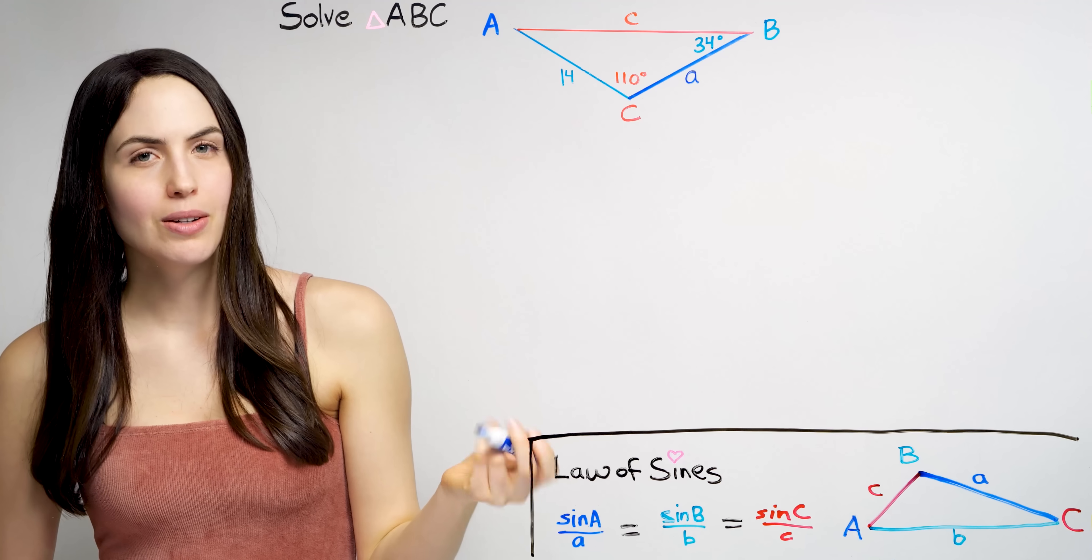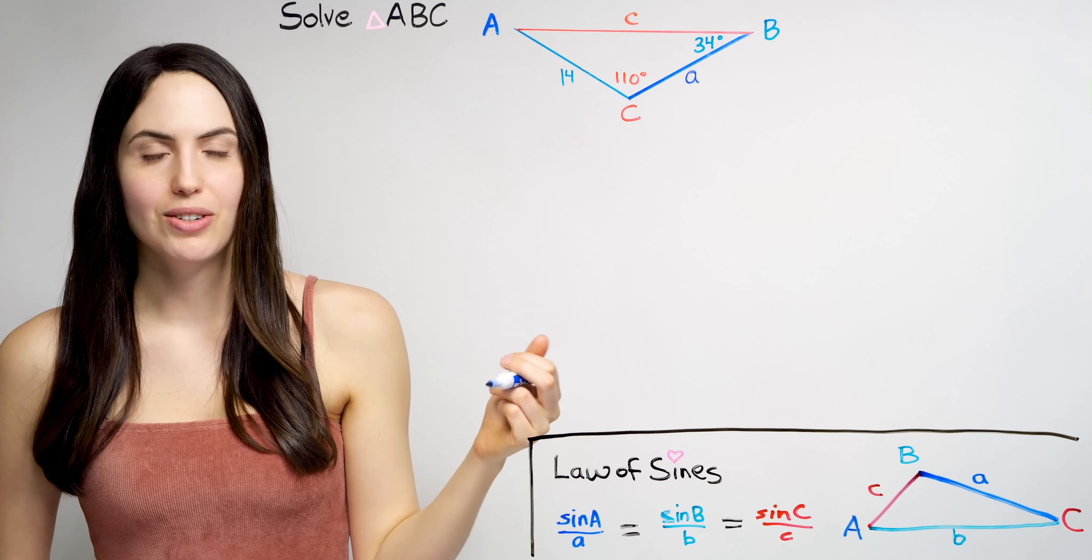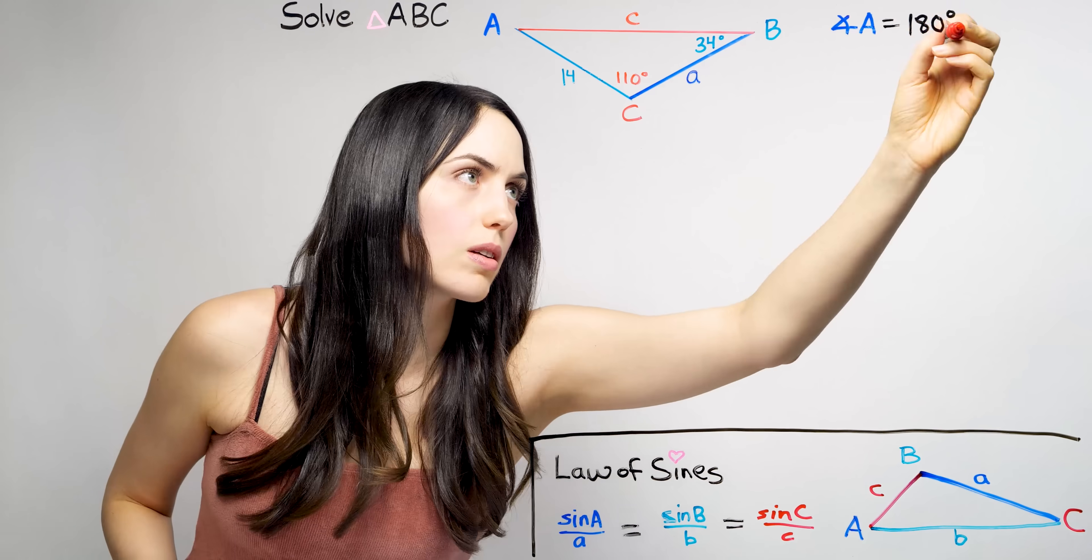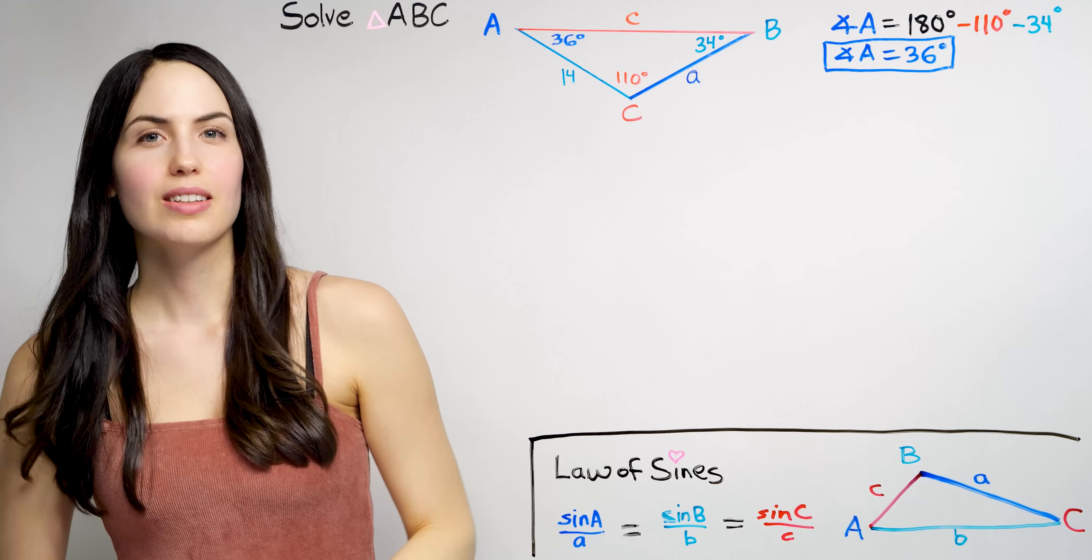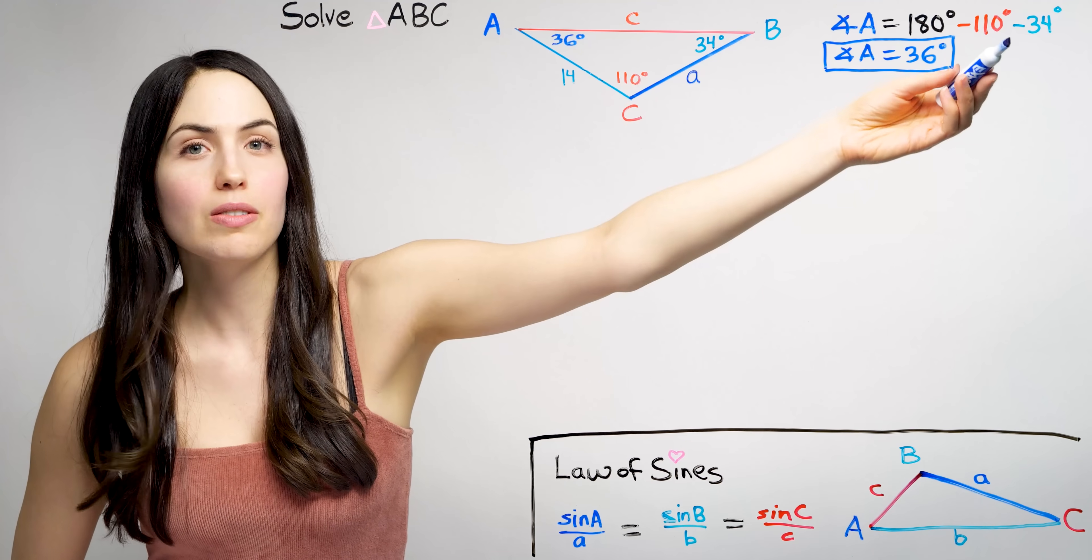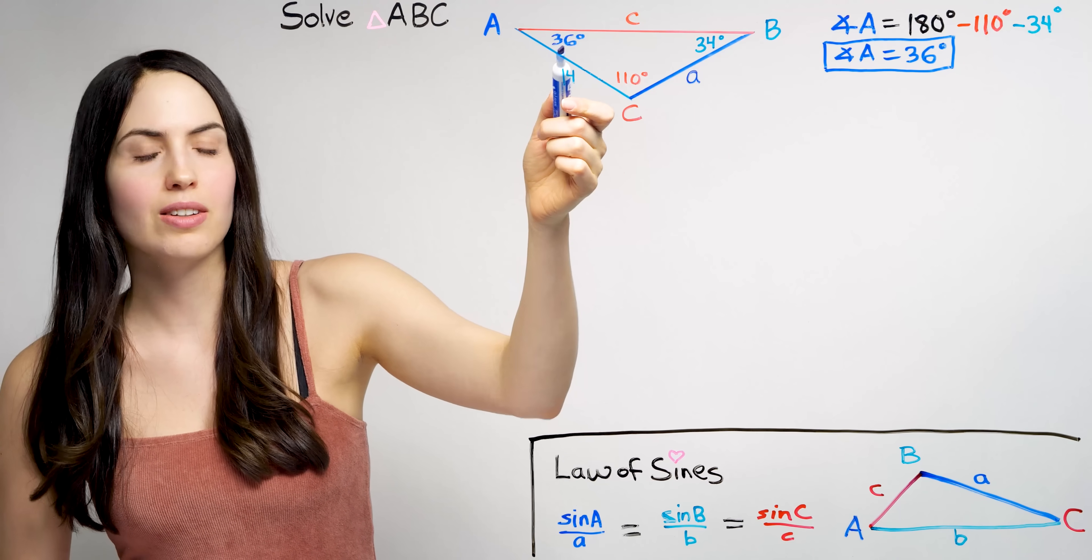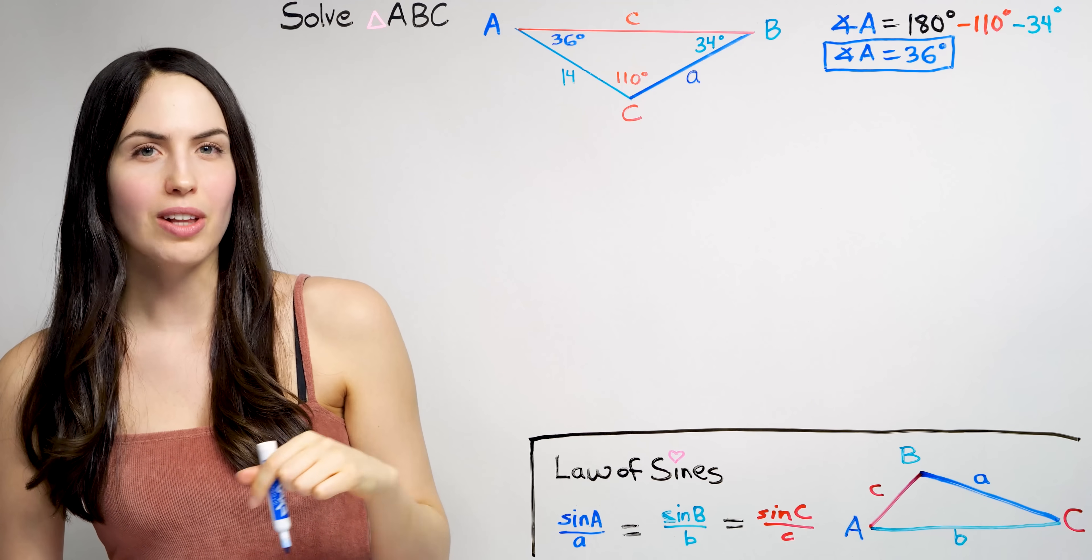We can get that really quickly though, just because the sum of the degrees in a triangle is 180 degrees. Always. So we can just subtract the angles that we do know from 180. We get 36 degrees for that missing third angle. We didn't even need a special new law for that.